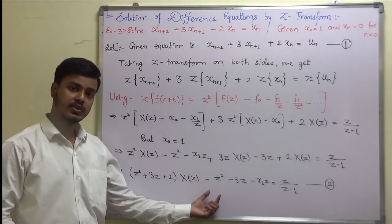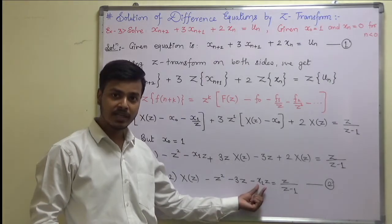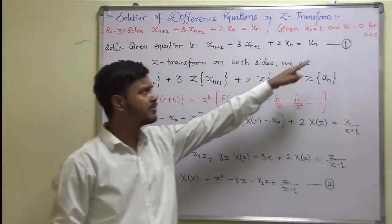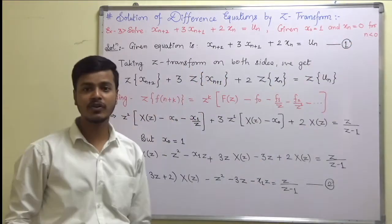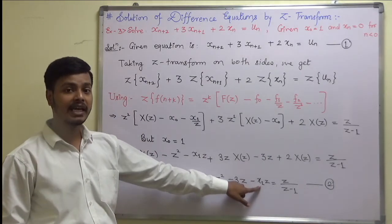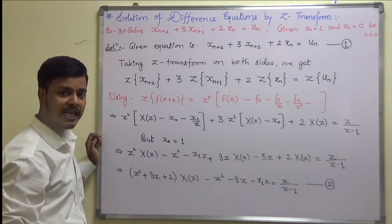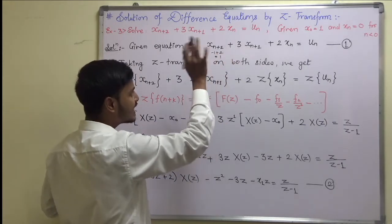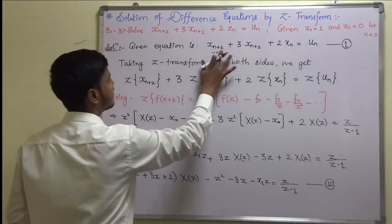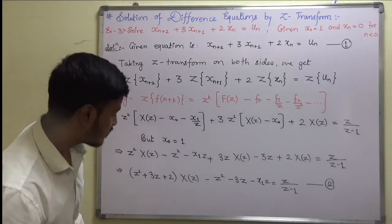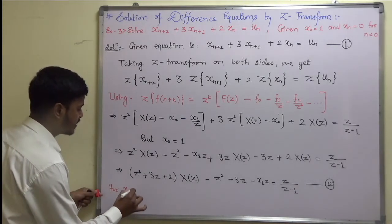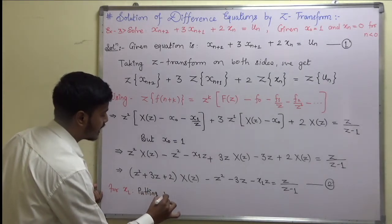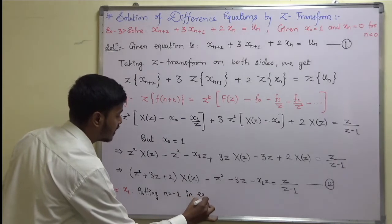I can solve this further only when I get the value of x1, but x1 is not given — that is the reason I am taking this problem. x1 is not given but the condition x(n) = 0 for n < 0 is given. To find x1, I will put n = -1 in equation 1. Putting n = -1: (-1+2) gives +1, so I can get x1 from here.